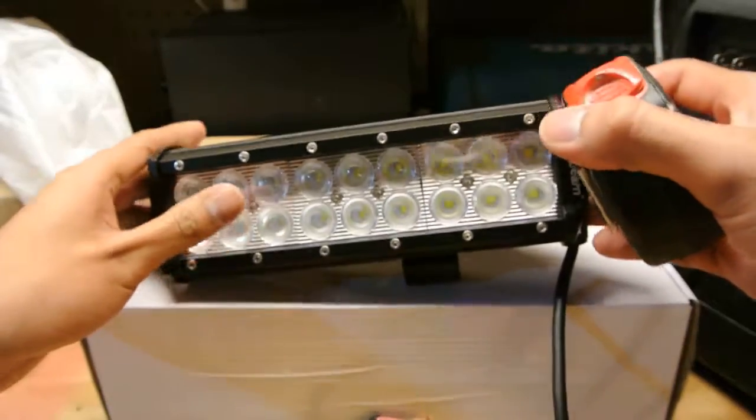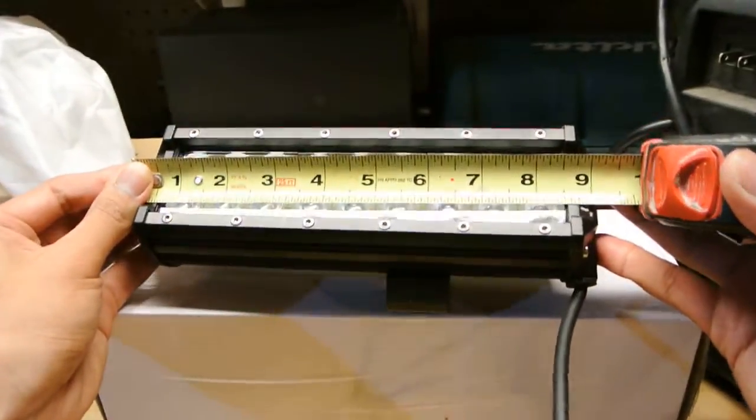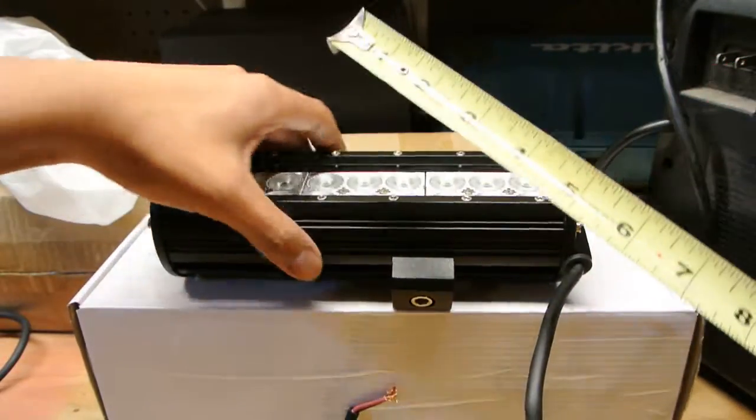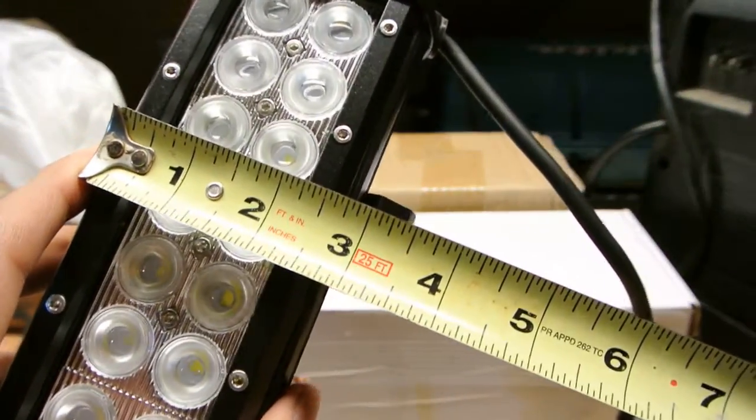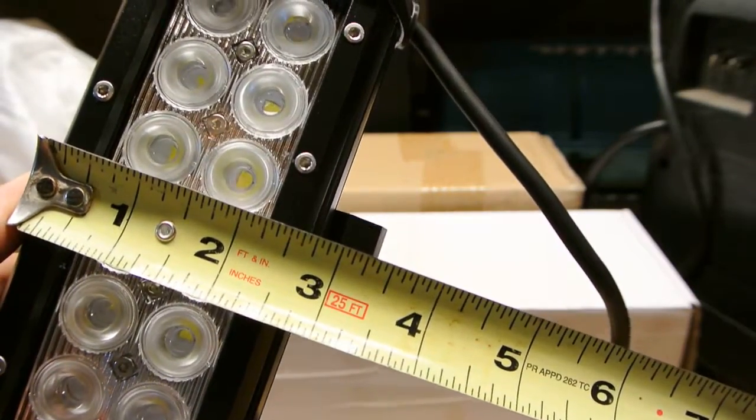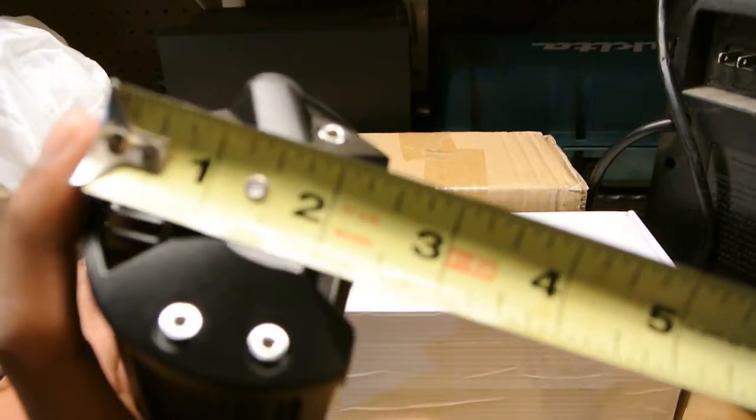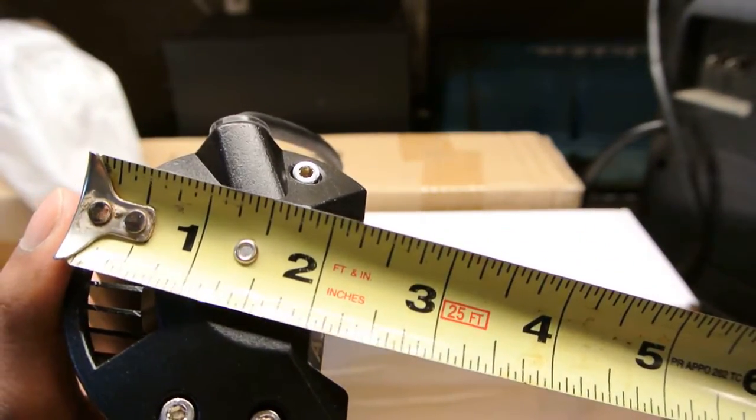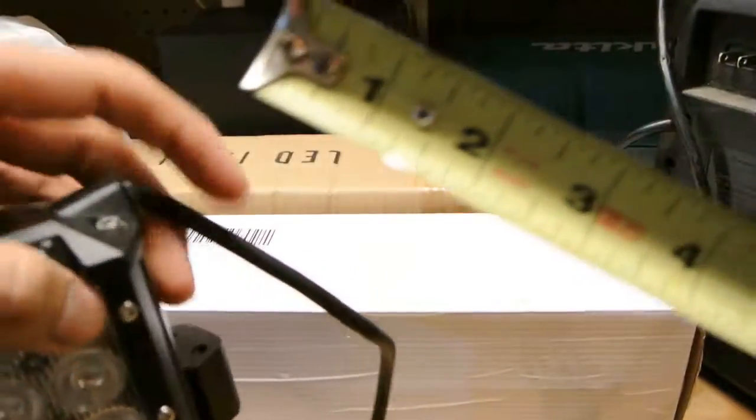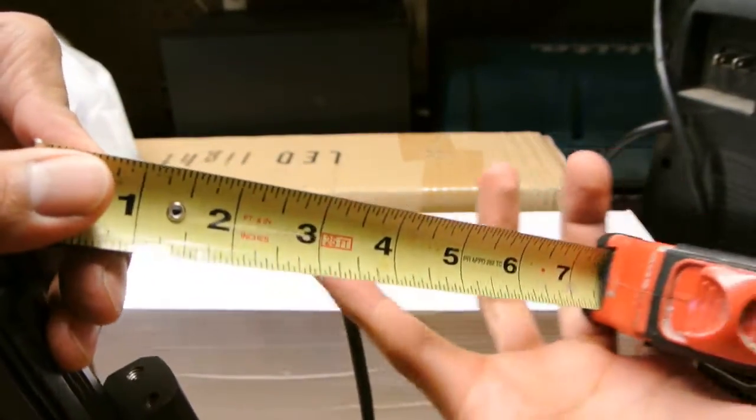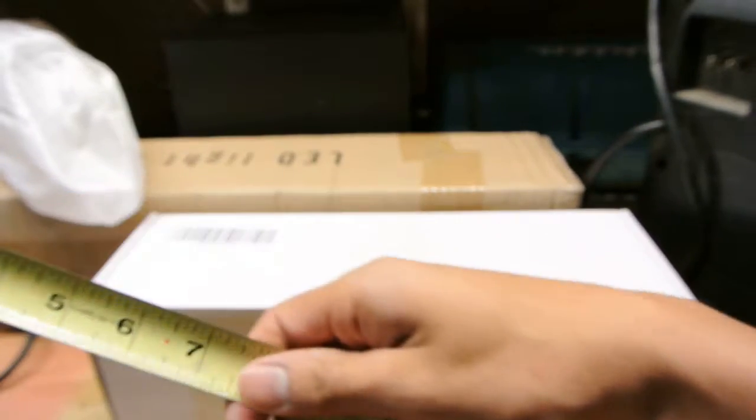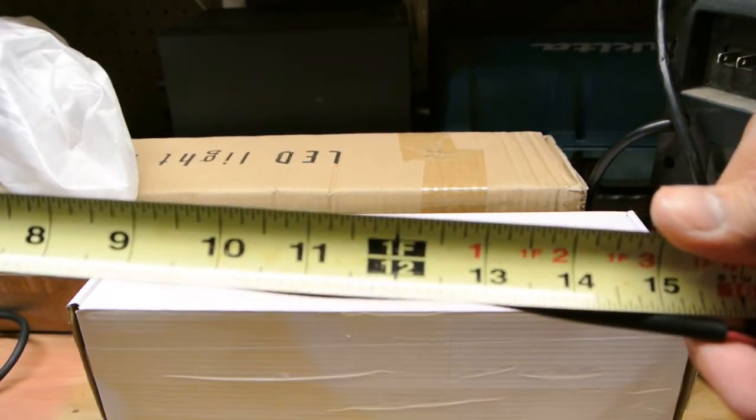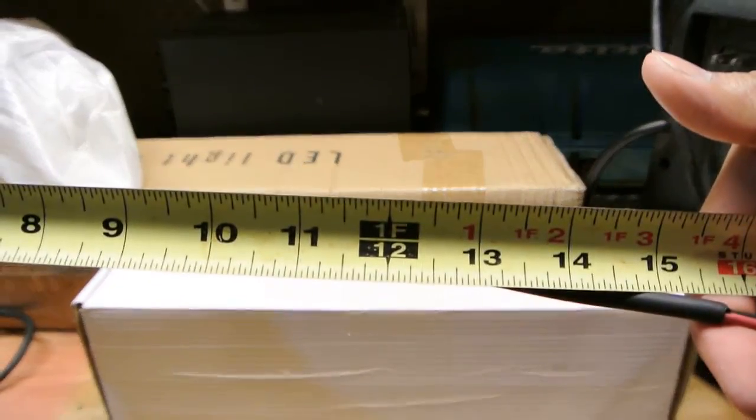I'll take a couple of measurements of the actual light. The actual width of it is 9 inches so it is a true 9 inch LED bar. The height from top to bottom you're looking at about 3 inches. The depth is about 2 and a half inches. And the wire that's supplied comes in at about 16 inches.